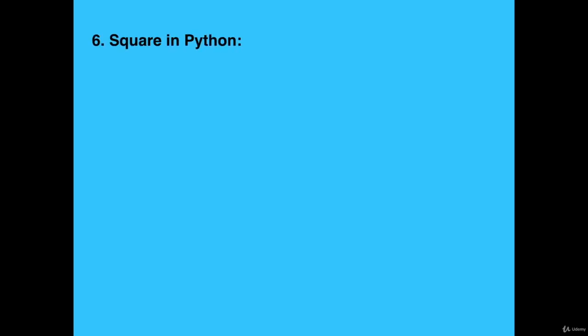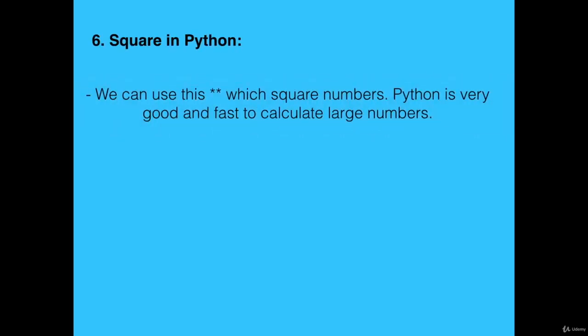How to use a square in Python. In Python, we can use the double asterisk operator, which means squaring a number.